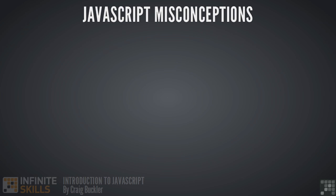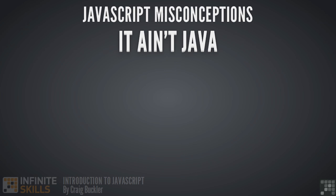Despite being one of the most successful programming languages ever devised, JavaScript is probably the most misunderstood. The first thing to understand: JavaScript is not Java. There are a number of superficial syntactical similarities, but they are not related in any way whatsoever. So if you're taking this course to learn Java, you're going to be a little bit disappointed.